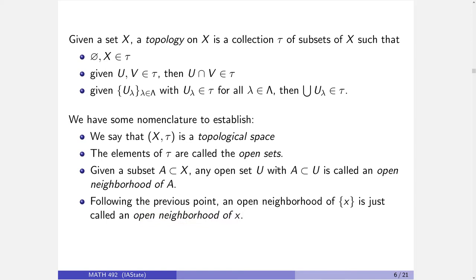A set equipped with a topology is called a topological space, written as an ordered pair. The elements of the topology are called open sets. Note: we had open in the reals with a very specific definition involving epsilons. But now, generally speaking, any collection of sets with these three properties we'll just call open — open with respect to this particular topology.